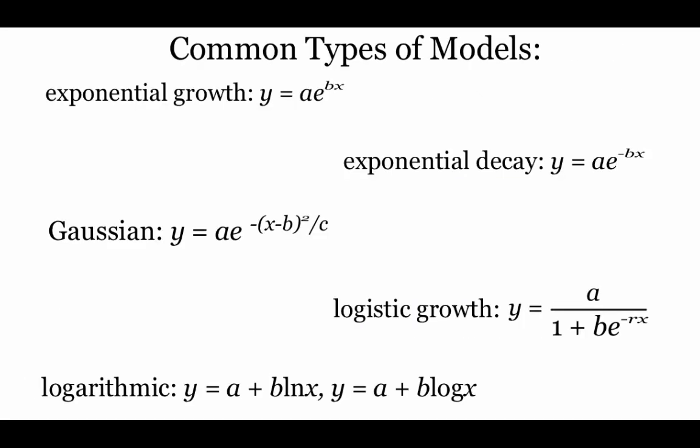These are the five most common types of models that use either exponentials or logarithms. We've got exponential growth, exponential decay, a Gaussian model, logistic growth, and a logarithmic model.